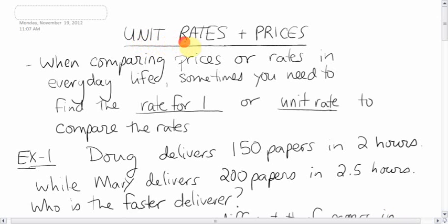Okay, so next topic is quite useful in everyday life, trying to find the unit rates and prices. A unit rate is pretty much the rate or cost for one item. Sometimes you might go to a store and you might see buy 12 candies for 95 cents. You want to know how much one candy would cost. So it's always handy to figure out what is the price or rate for one. And when comparing prices or rates in everyday life, it's useful to convert these numbers into a rate for one or a unit rate. Once you've done that, then you can compare the rates.